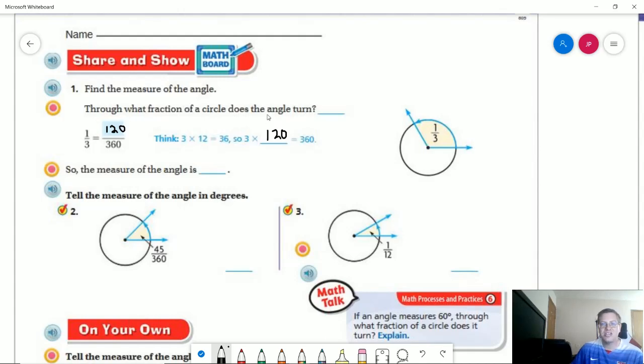So what fraction of the circle does the angle turn? Well 120 degrees would actually, that would be a third. So here would be our second one and then this. So what fraction of the circle? So it would be 120 degrees or one third.